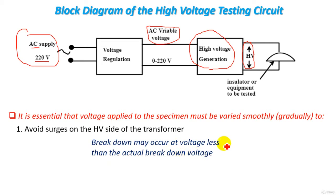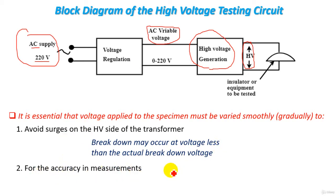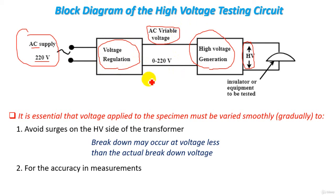This would give an inaccurate reading of the breakdown voltage. For accuracy of measurement and to determine an accurate dielectric strength or breakdown voltage of the specimen, voltage regulation is very important. The variable voltage must be varied smoothly and gradually for these reasons.